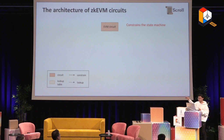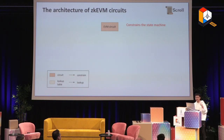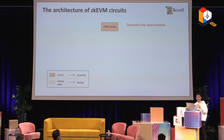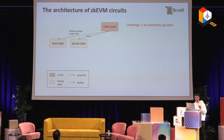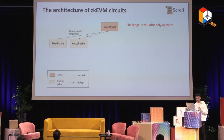In the EVM circuit, we only constrain that this state machine is correct. For example, when you switch from state one to state two, you need constraints to ensure that switch happens correctly and consistently. You also need to prove that the opcode filled in those states is correct. For each opcode, you need some sub-circuit. Here is challenge one: there are so many ZK-unfriendly opcodes. There are bitwise opcodes — in ZK you have to decompose every value into bitwise values and have a lot of constraints. And there is SHA-3 (Keccak), which is very hard to prove in ZK circuits.